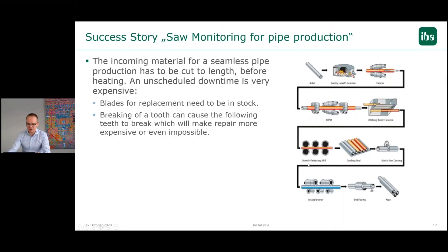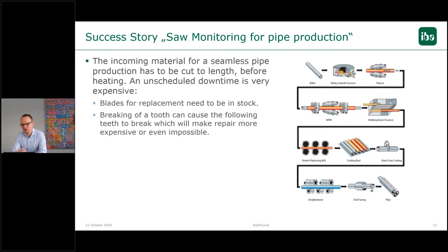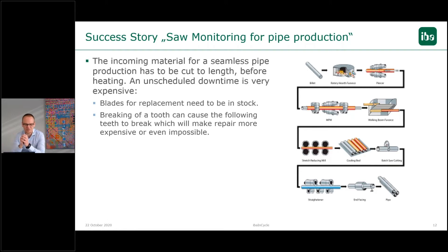The next application is saw monitoring for seamless pipe production. This was our first beta test — we tested this during the development of the IBA-N cycle. The goal there was that the material for the seamless pipe production has to be cut to the correct length before it goes to the heating and all the other process steps behind.